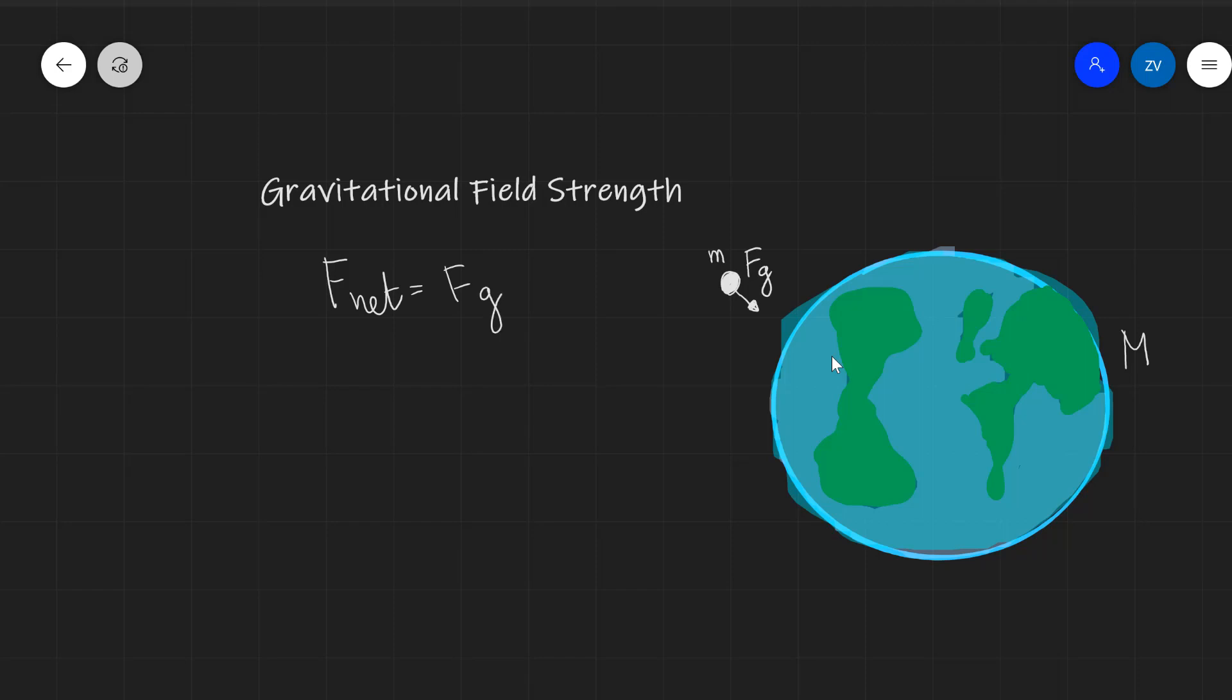This is Newton's law of universal gravitational attraction. So we can say that the net force is actually equal to minus G, where G is the universal gravitational constant, times the product of the two masses divided by the distance between them. Now, assuming that the distance between the mass and the center of the Earth is R, so minus GMm over R squared.